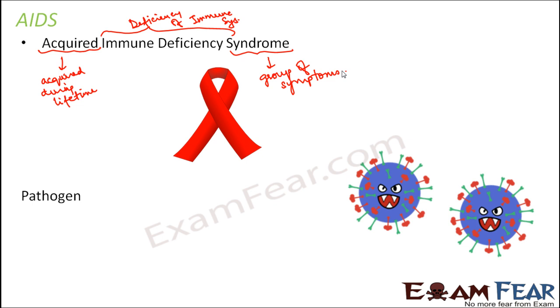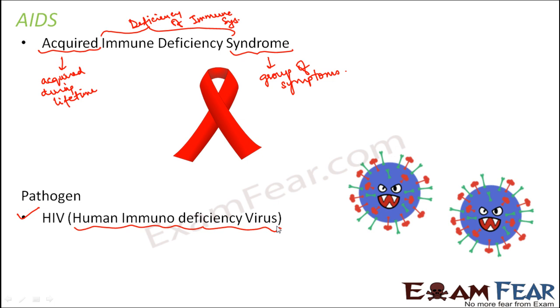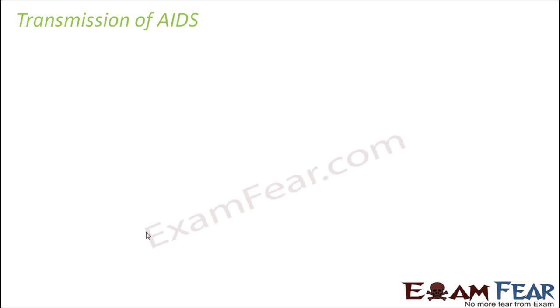The pathogen which causes AIDS is a virus called HIV — Human Immunodeficiency Virus. Since it is such an infectious disease without a complete cure, it is very important to understand how this disease gets transmitted so that precautions and prevention can be taken.